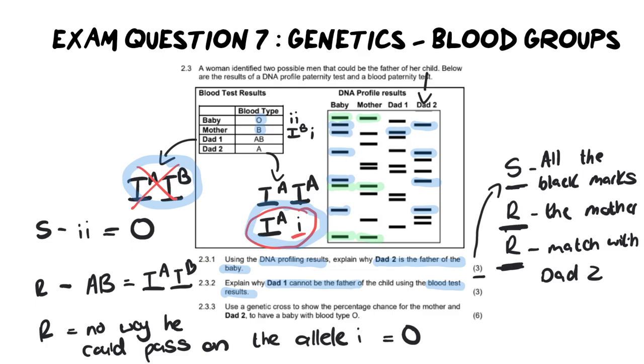Now, our final question says, we need to use a genetic cross to show the percentage chance for the mother and dad two to have a baby with blood group O. So remember, a genetic cross is doing like a monohybrid cross. And for simplicity in this video, I'm not going to redraw the entire cross for you. I'm going to show you the memo and I'm going to point out the key things that you must include in order to calculate this. Now, before we do that, I want to remind you that the mother is blood group B and the father is, as we've determined now, A.